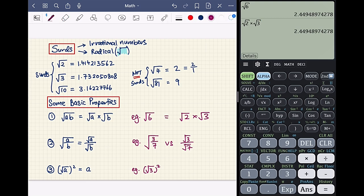Next, let's look at property number 2. Square root of a fraction a over b is equal to square root of a over square root of b.